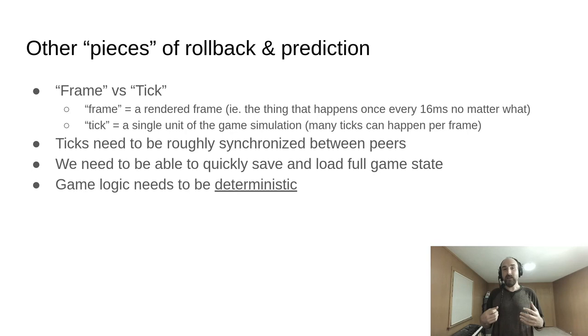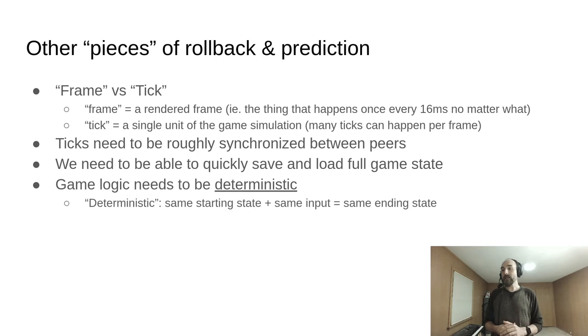All of the game logic needs to be deterministic. Deterministic means with the same starting state, applying the same input will lead to the same resulting state. This is super important because with rollback and prediction, we are only synchronizing input. Other techniques synchronize state or a mix of input and state, but in pure rollback prediction, we only synchronize input. If the game will sometimes get different resulting states from the same state and input, then the peers will go out of sync.